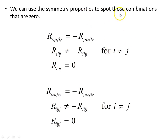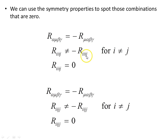We can use the symmetry properties to identify combinations that go to zero. From the first symmetry property, R alpha mu beta gamma becomes negative when the first two indices are reversed. This tells us that components where the first three indices are the same and the last one differs cannot satisfy this — they can't be the negative of themselves — and so any Riemann tensor component with the first three indices the same and the last one different will be zero.